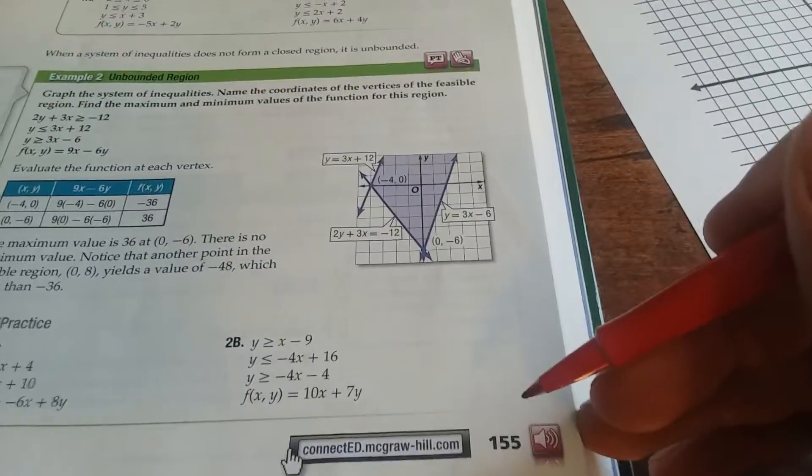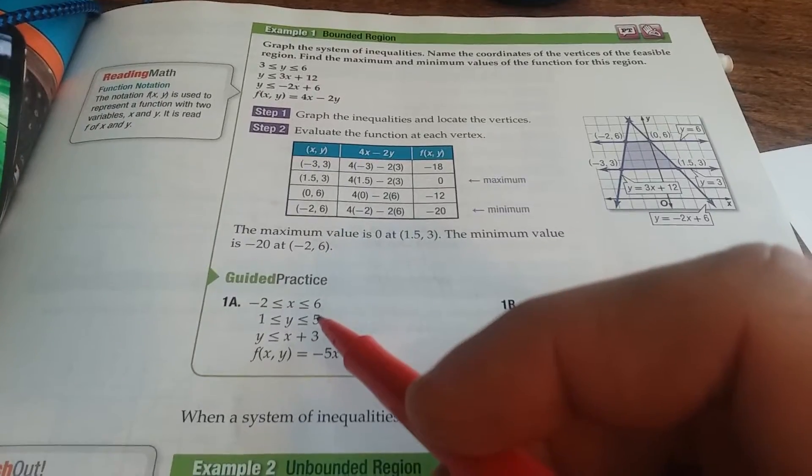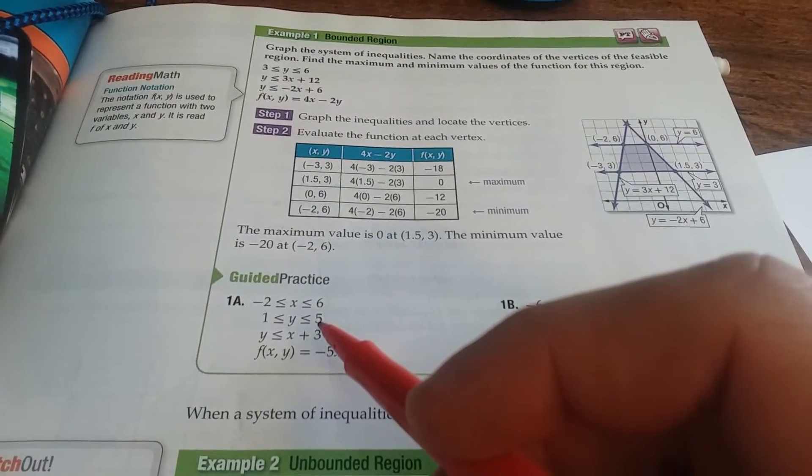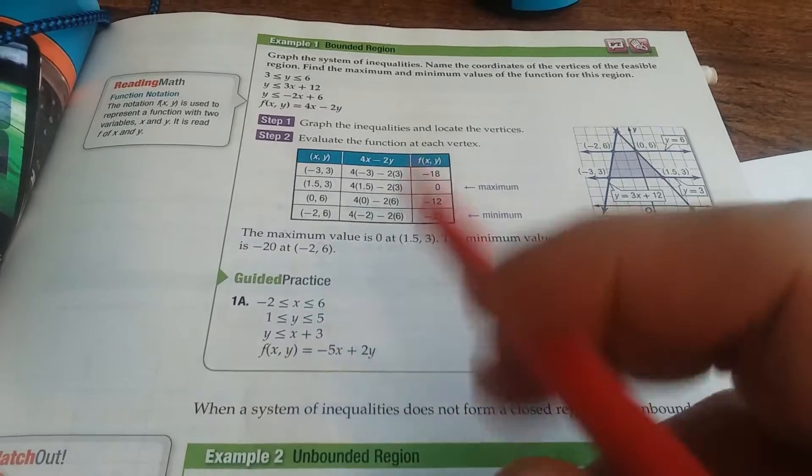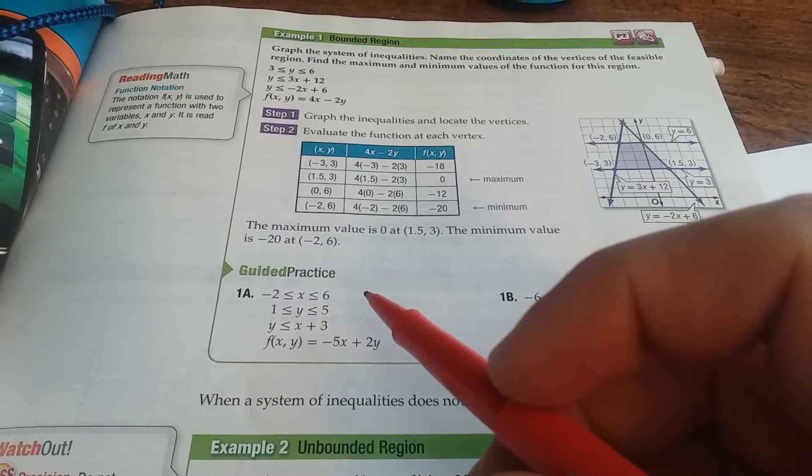Hello everyone, we're on page 155. I'm going to look at example 1a. What we need to do is graph the system of inequalities and name the coordinates of the vertices of the feasible region, and then find the maximum and minimum values of the function for this region.